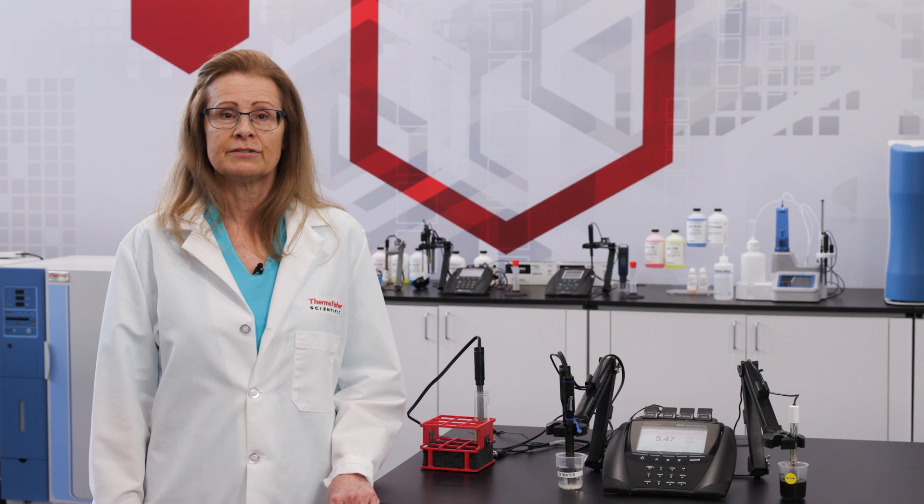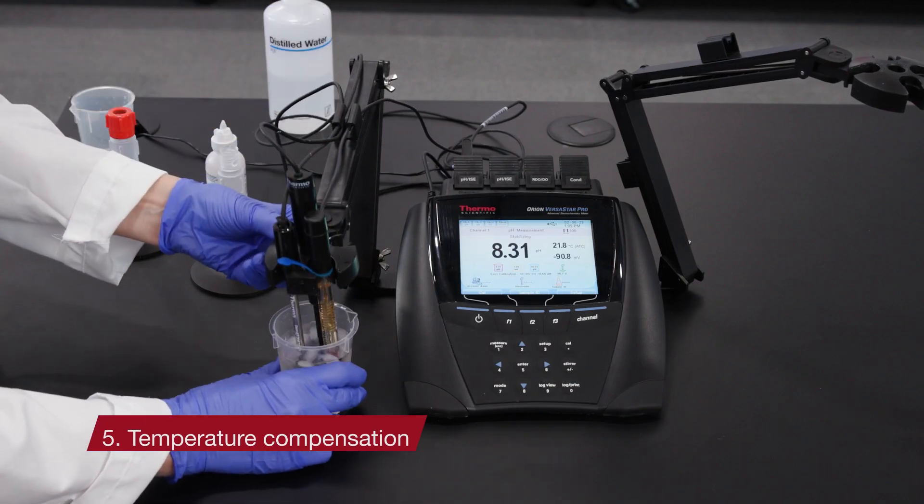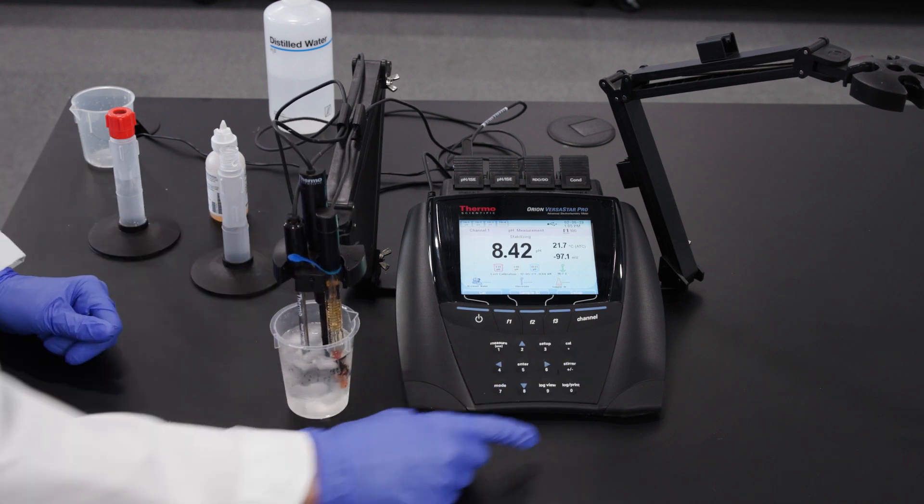Tune-up number five, temperature compensation. Use an ATC or triode electrode to ensure that the pH readings are accurate no matter what temperature your samples are at.